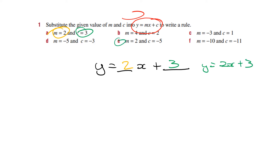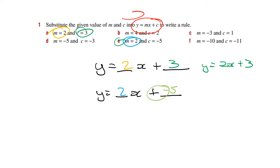Let's do part e. Again, y equals, with space for m and c. My m is 2, so I put 2 there. The c is minus 5, so I put minus 5 here. Remember, if I've got a plus and a minus here, that becomes a minus. So my answer would be y equals 2x minus 5.